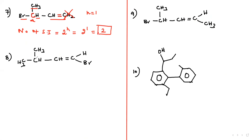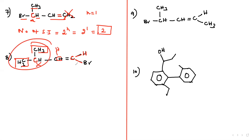Next molecule: one carbon has CH3 and CH3 — same groups, so no chiral center there. But the other carbon has H, Br, and a bulky group — that is chiral. This double bond carbon has H and Br, which are different, so geometrical isomerism is favorable. n = 1, giving 2^1 = 2 stereoisomers.